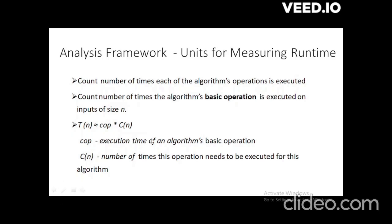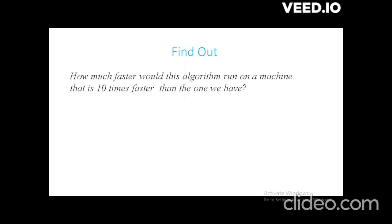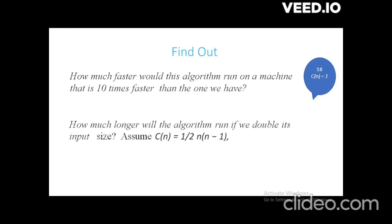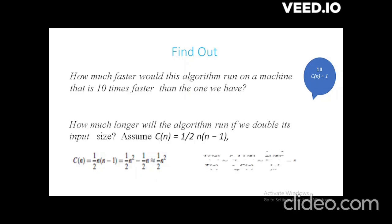We will not focus much on the execution time of the basic operation — here is why. If I want to find how much faster my algorithm runs on a machine 10 times faster, and the count is 1, it is direct multiplication. For the second question — how much longer will the algorithm run if we double its input size — the count is given as half N(N-1). On simplification I get the value as half N squared. Now let us apply the formula: this is the given T(N).